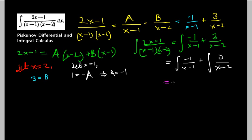Minus 1 is a constant, I can take it out. The integral of -1/(x-1) is the natural log of the absolute value of x-1. Plus 3 times the natural log of the absolute value of x-2. And you can add plus C here.